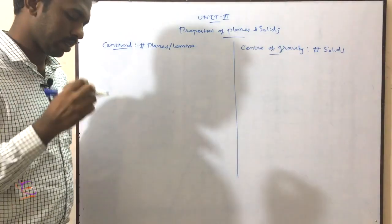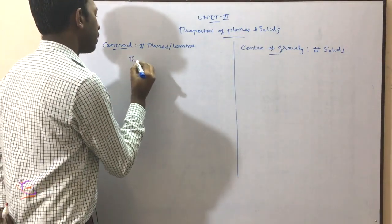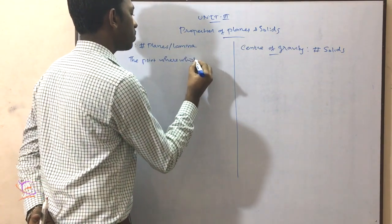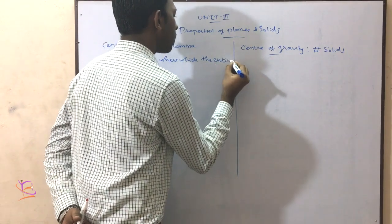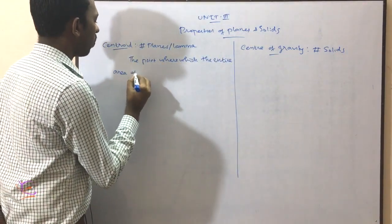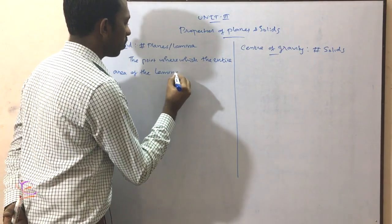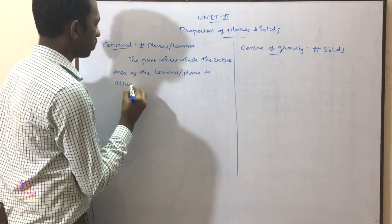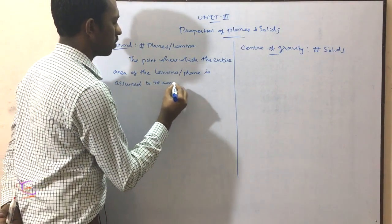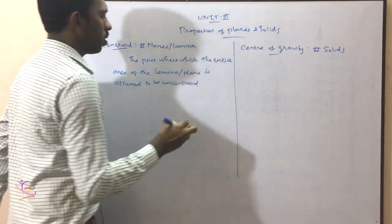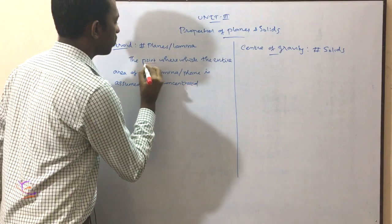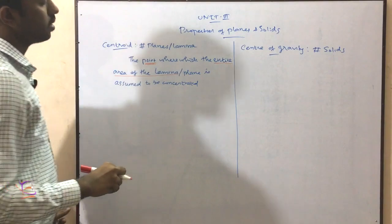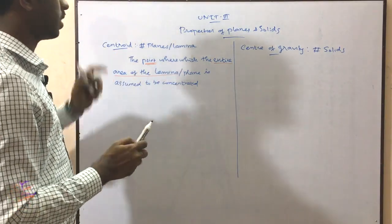First of all we can discuss about the centroid. The point where the entire area of the lamina or plane is assumed to be concentrated — that point is what is called the centroid.